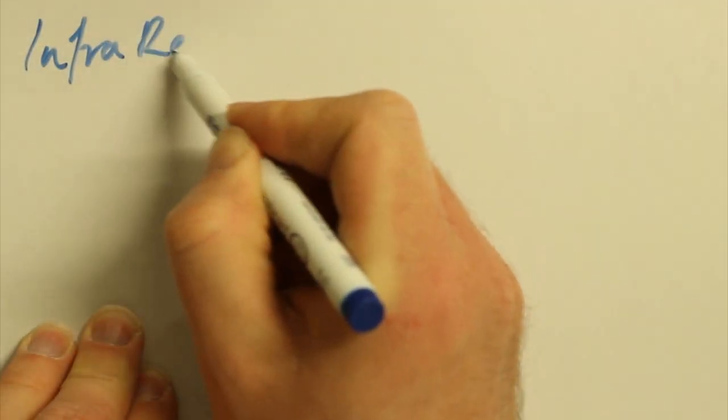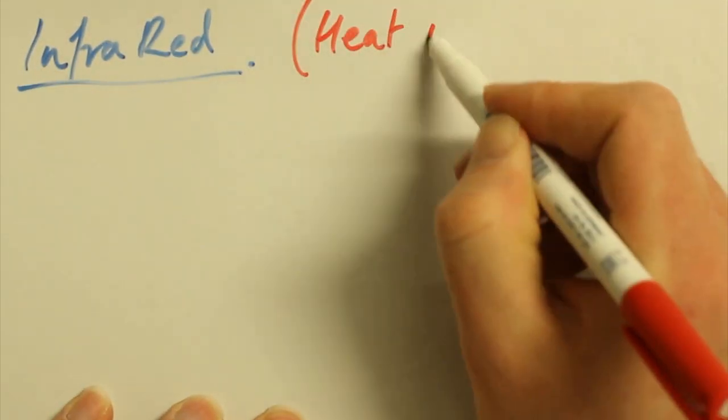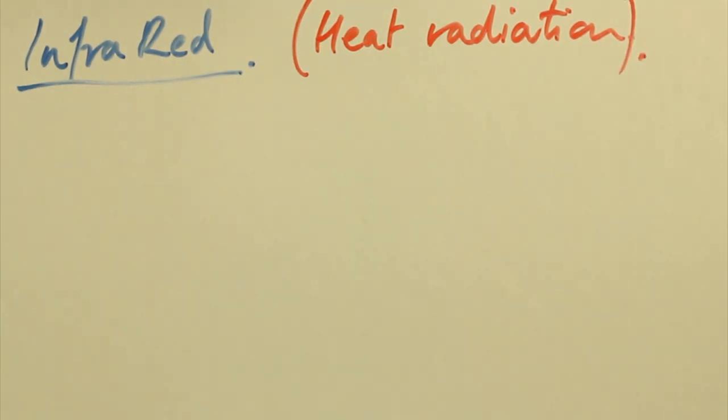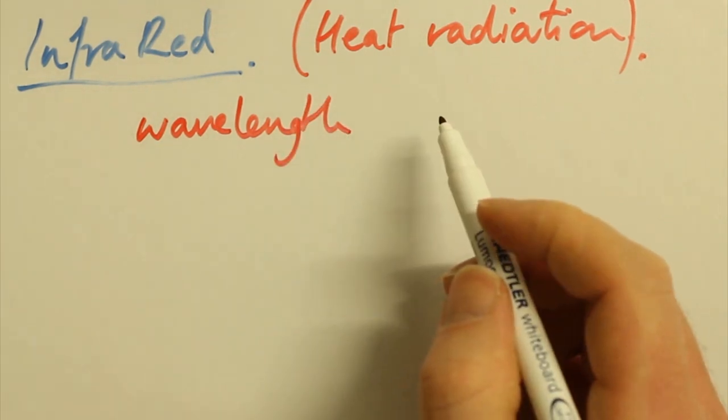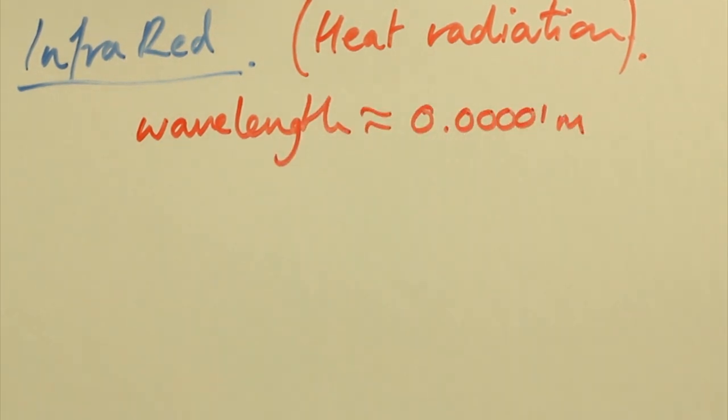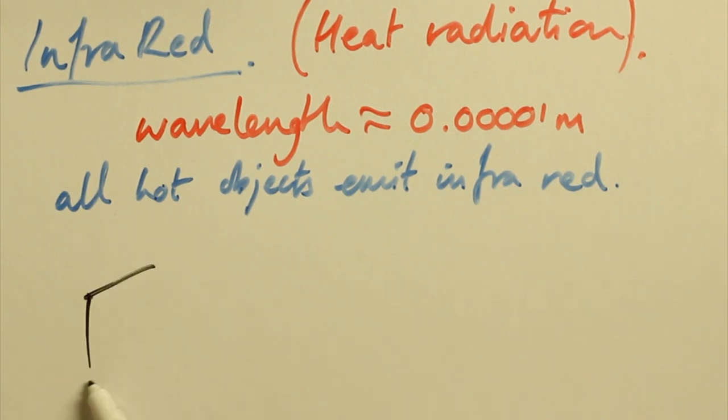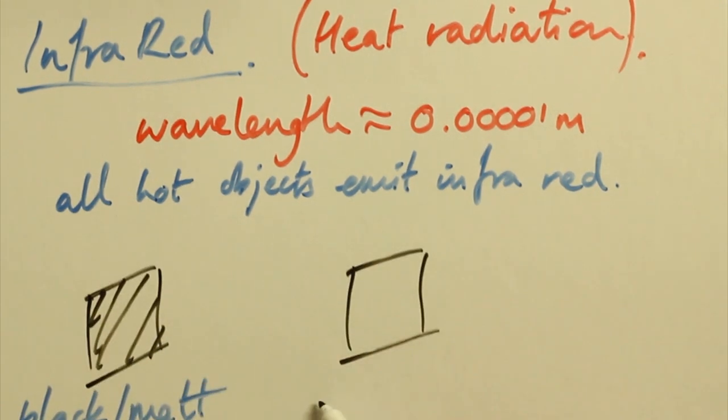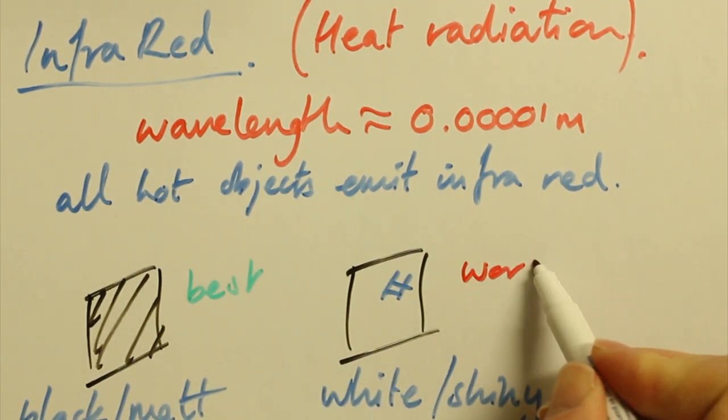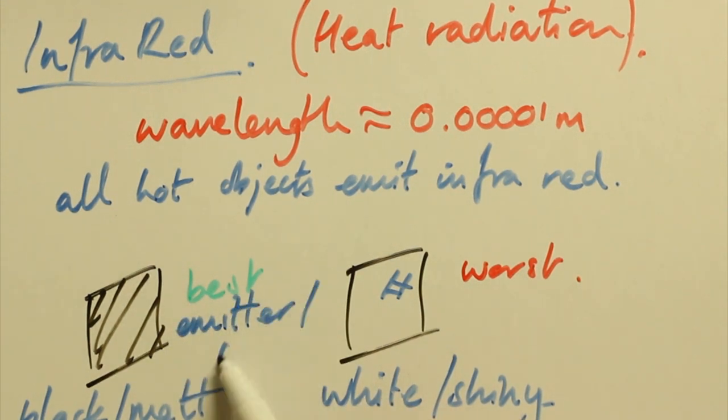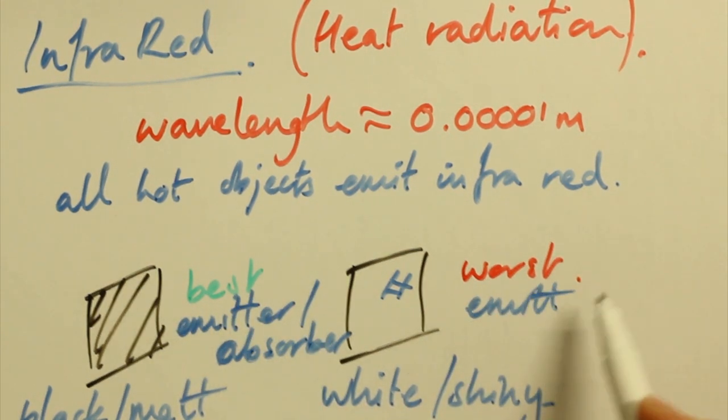Infrared radiation is often just called heat radiation. It's the next portion, with wavelengths of about 0.001 meter, which is a tenth of a millimeter. The hotter an object is, the more infrared it emits. But all objects above absolute zero emit infrared. You might remember from your thermal physics portion that dull or matte black surfaces are the best emitters and best absorbers, and light and shiny surfaces are the worst emitters and absorbers of infrared.